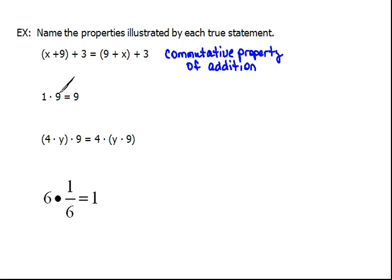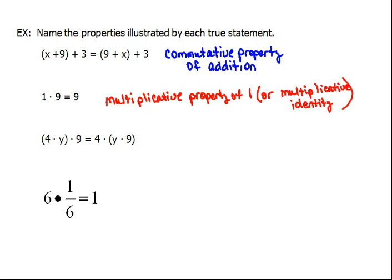Our next one says 1 times 9 equals 9. This is dealing with whatever our number is, we're multiplying it to something and it doesn't change. That's dealing with identities. So, this is the multiplicative property of 1, or another way of saying that is the multiplicative identity.